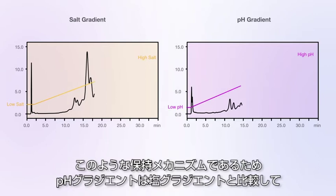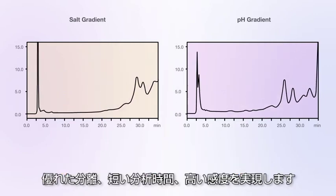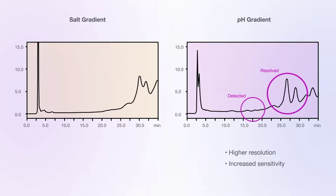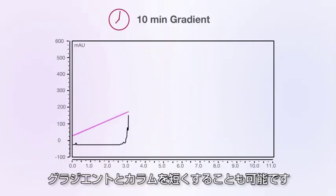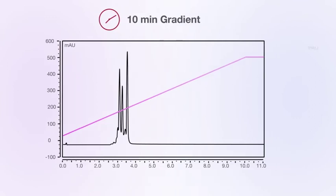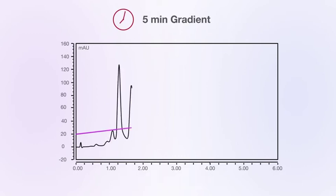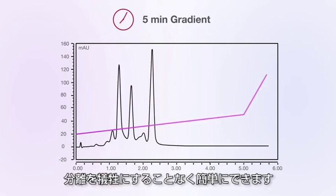Consequently, pH gradients offer superior resolution, speed, and sensitivity compared to traditional salt gradients. Both columns and gradients can be short, and fast platform methods can be optimized easily, without loss of resolution, for multiple candidates.